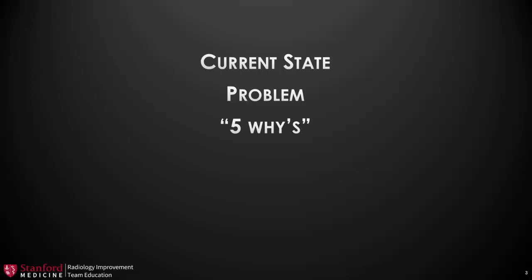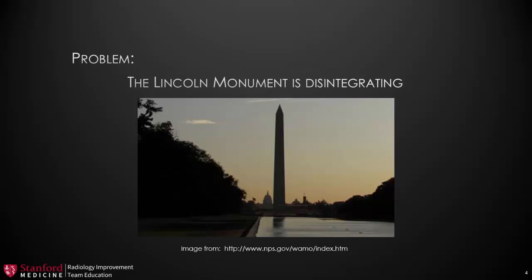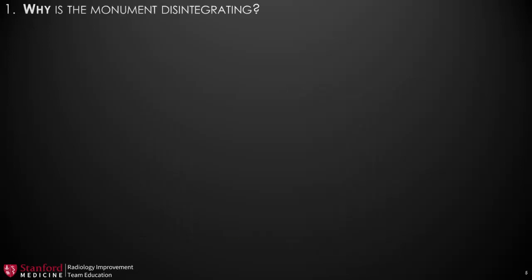Let's look at a problem for example. The Lincoln Monument is disintegrating. Now, that's a pretty large problem to solve. So if we ask why a few times, we may get to a manageable solution that we can implement. So why is the monument disintegrating? Well, we use harsh chemicals to clean the monument. Well, that's a pretty good explanation. And we could stop there by looking at our chemical process, maybe the brushes we use, or how frequently we clean the monument.